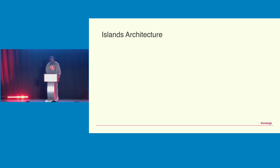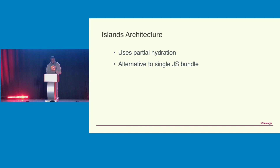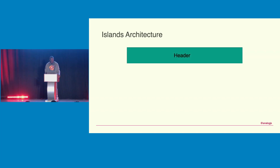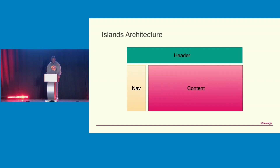There's also the islands architecture, which uses partial hydration to build websites. Instead of shipping a single bundle for the entire application, it breaks your app into smaller independent pieces. For example, a header, a navigation bar, and a main content area can each be loaded on their own island independently of each other, allowing you to ship only the JavaScript you need.